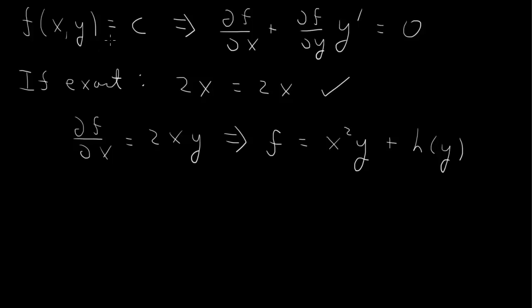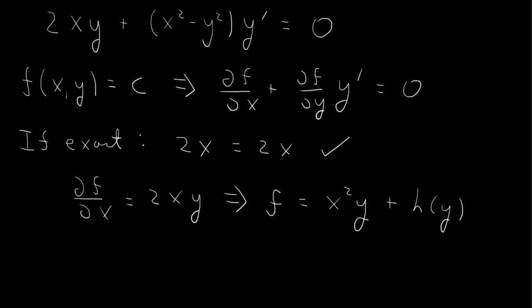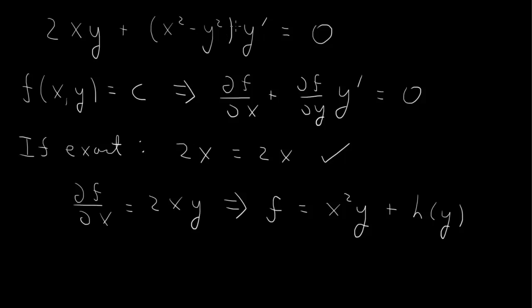So we're trying to find our f. We know that f now up to a function of y, but we know what df/dy is equal to. So if we go back, this one is our df/dx, this is our df/dy. So df/dy is x squared minus y squared.